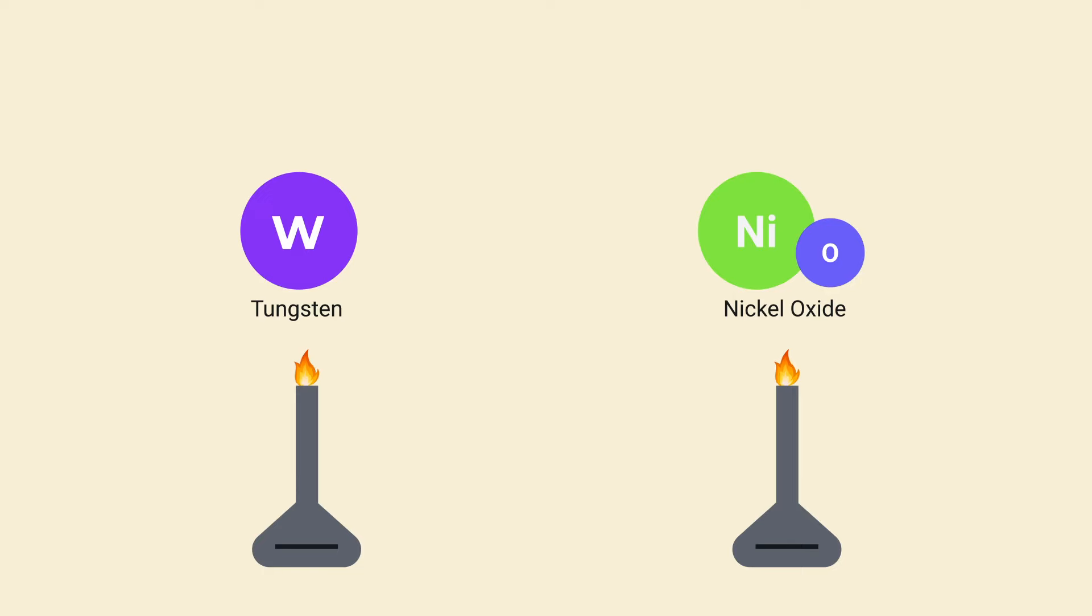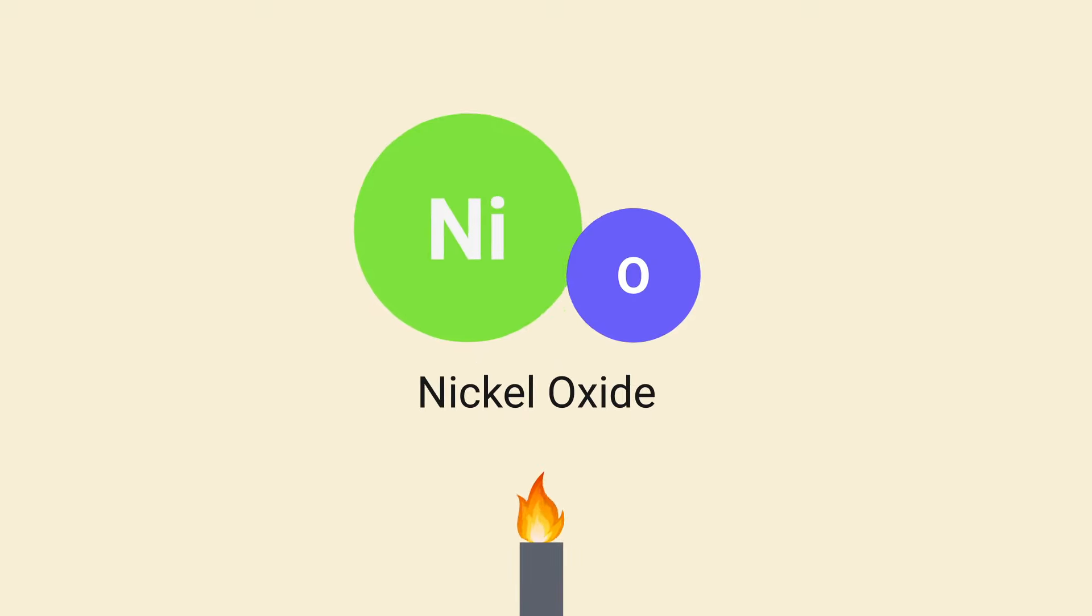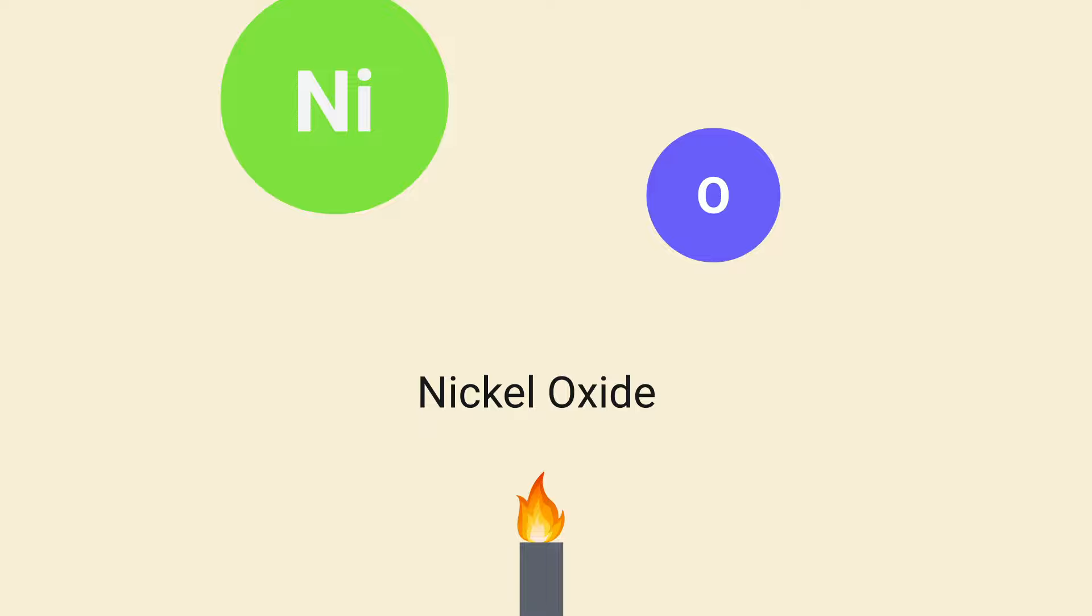The mechanical nature of sputtering avoids the problems you may experience with other deposition methods. Metals such as tungsten are difficult to heat because its melting point is too high. Some compounds such as nickel oxide can even break up when heated by evaporation techniques.